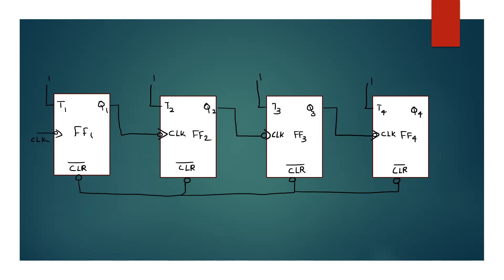We set the set button and choose the clear button. We choose the Q4 and Q2 outputs and feed them into an active-low NAND gate. The NAND gate output goes to zero when both inputs are active, triggering the clear. This clears the R-bar and resets the counter. That is why we call it the BCD ripple counter. You can see the logic diagram.